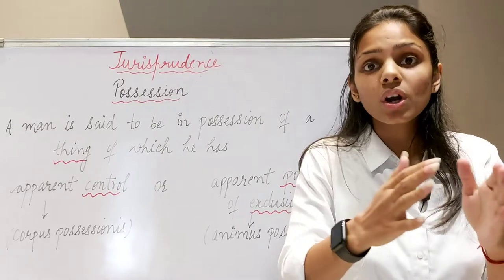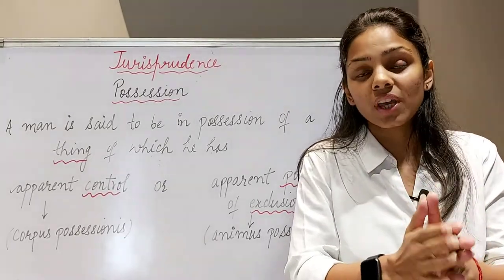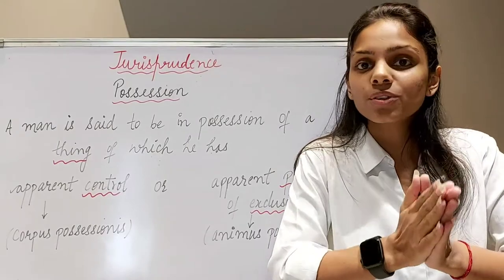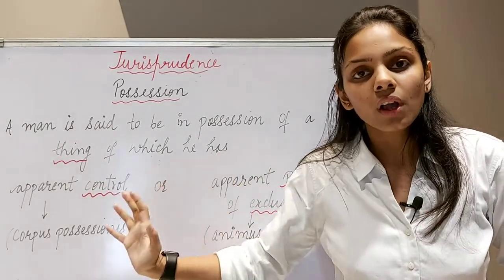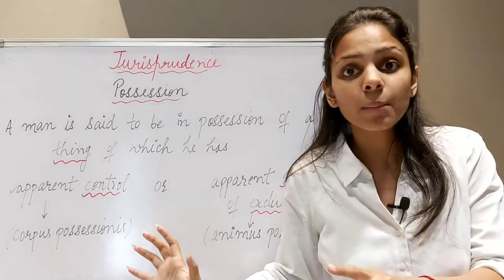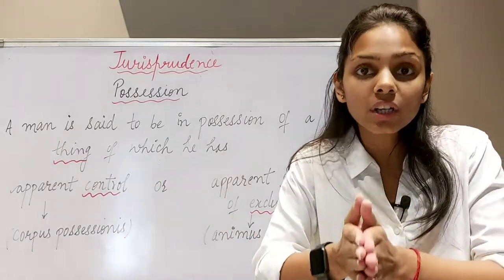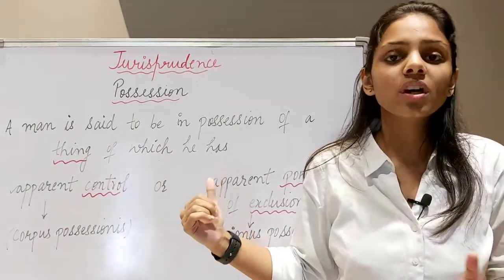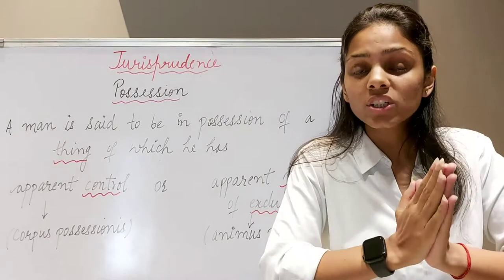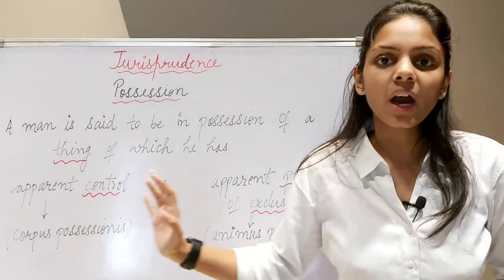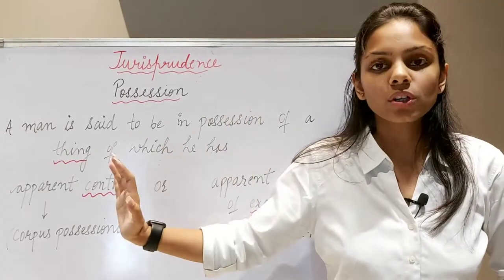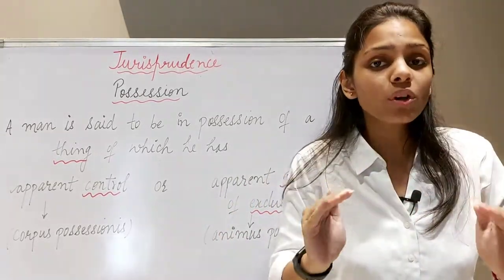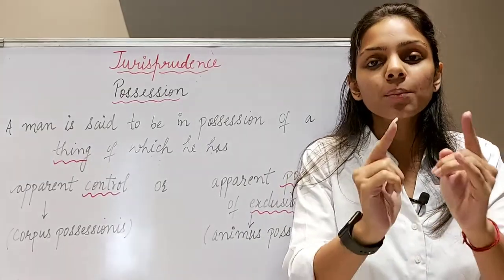But a point to be noted is that possession ko commence hone ke liye, usko start hone ke liye, dono ka hona zaroori hai. Jab corpus aur animus dono ek time par ikatthe honge, co-exist karenge, hum kahenge possession commence ho chuki hai. It is necessary for these two elements of possession to co-exist for possession to at least commence. But it is not at all mandatory for possession to continue ki har time ye dono cheezein co-exist karain — either this or that. Possession khatam hogi sirf tab jab hum actual mein abandon kar denge dono cheezaon ko — corpus ko bhi, animus ko bhi.